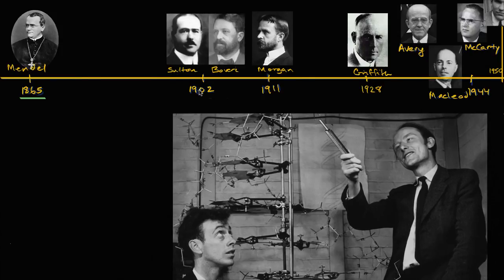In 1902, and we talked about this in a previous video, Boveri and Sutton came up with the chromosome theory based on seeing how chromosomes separate and pair during cell division, noting that they seem to map quite well to what Mendel described as heritable factors.